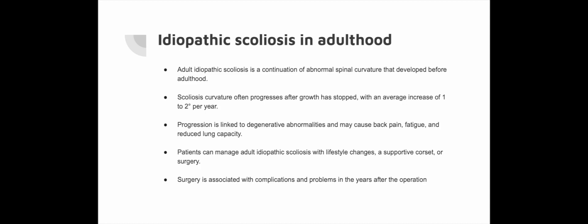In some cases, a supportive corset may be prescribed to help manage pain and improve posture. Surgical correction is typically only considered for patients with progressive curvature or disabling back and leg pain, involving fixation of a large part of the spine. However, surgery for adult idiopathic scoliosis carries a higher risk of complications compared to surgery for childhood scoliosis, including degenerative abnormalities at adjacent spinal levels, fractures, kyphosis and spondylolisthesis.